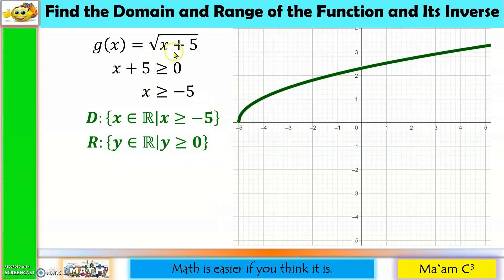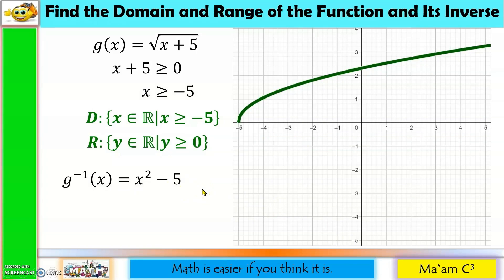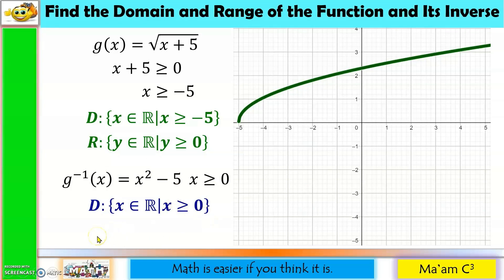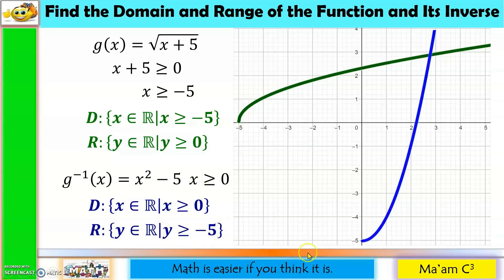The inverse of √(x + 5) is x² − 5, a quadratic function. Although a quadratic normally has domain of all real numbers, we restrict it to x ≥ 0 to keep it one-to-one. The domain of the inverse equals the range of the original function (x ≥ 0), and the range of the inverse equals the domain of the original function (y ≥ −5). Graphing and folding along y = x confirms they are inverses.